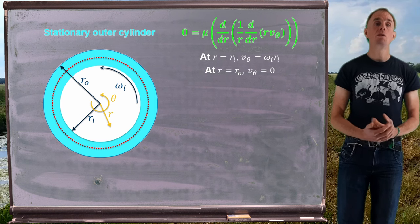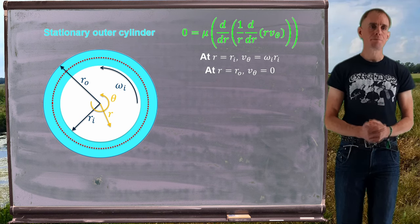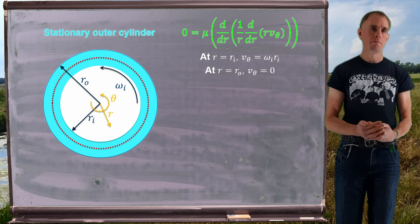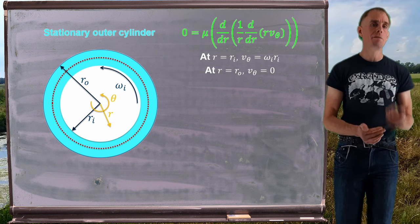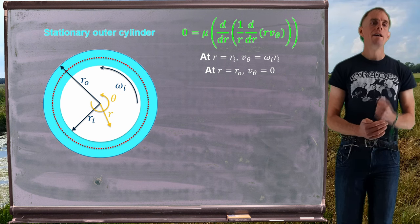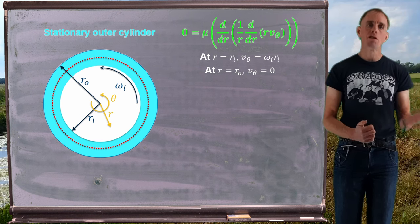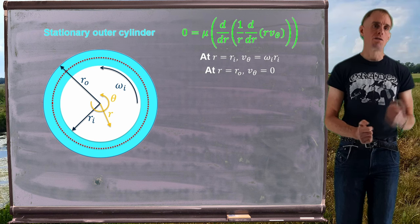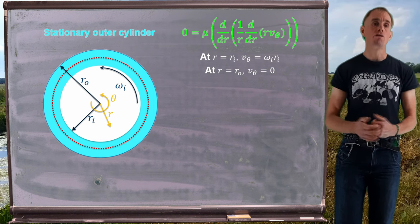Now we identify boundary conditions. At the surface of the inner cylinder, at r equals r_i, we have an imposed angular velocity. Remembering that v equals r omega, the theta-direction velocity v_theta equals omega_i times r_i, where omega_i is the angular velocity of the inner cylinder. At the outer cylinder, fluid is stuck to the wall, and since the outer cylinder is stationary, v_theta equals 0 at r equals r_o. So we have two no-slip boundary conditions and a wall-driven flow.